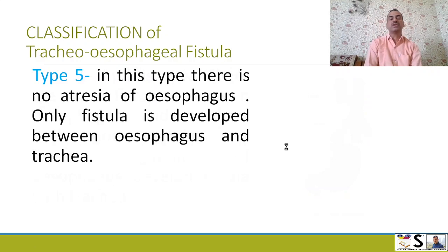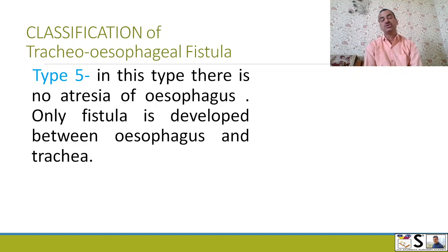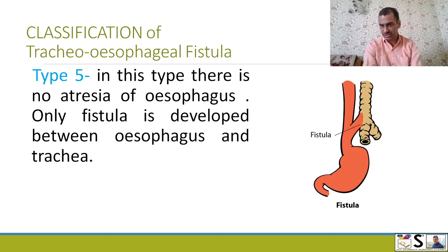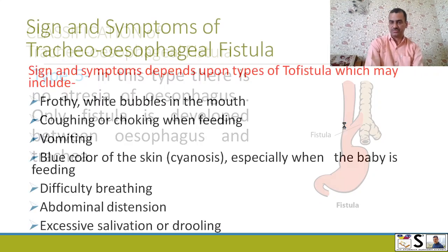Now we come to the fifth type. In this type, there is no atresia of the esophagus — meaning the esophagus is continuous — but a fistula develops between the esophagus and trachea. As shown in the picture, this is the esophagus, this is the trachea, and there is fistula formation. This is Type 5.